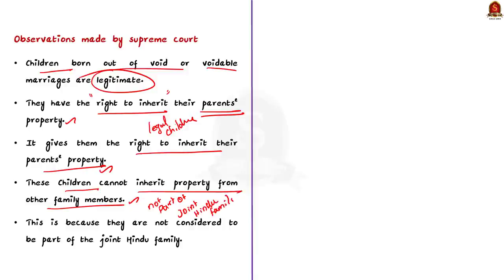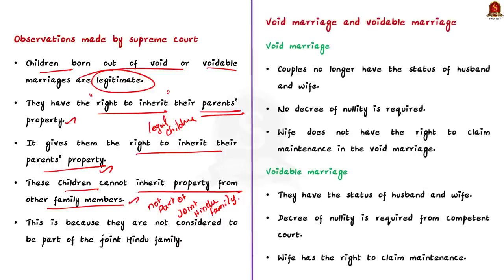Here we need to know what is a void marriage and a voidable marriage. There are three types of marriage: valid marriage, void marriage, and voidable marriage. These are covered under Section 11 and Section 12 of the Hindu Marriage Act 1955.